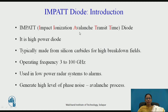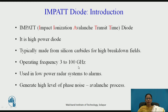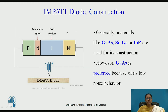Let us look first at the IMPATT diode. IMPATT stands for Impact Ionization Avalanche Transit Time diode. It is a high power diode. It is made up of silicon carbides with a high breakdown phase. Its operating frequency is 3 to 100 gigahertz. It is used in low power radar systems and alarms. These generate a high level of phase noise because of the avalanche process.